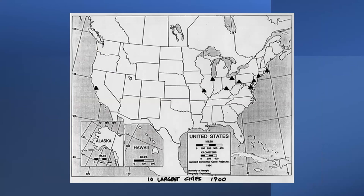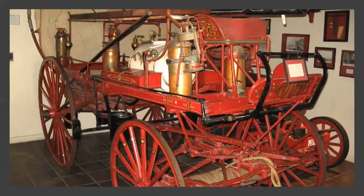Philadelphia at 1.3 million, St. Louis at 600,000, and Boston at 560,000. Accelerating urban growth placed urgent demands on public utilities, transportation systems, and fire and police departments. City politicians raised taxes, issued bonds, and created new municipal departments.